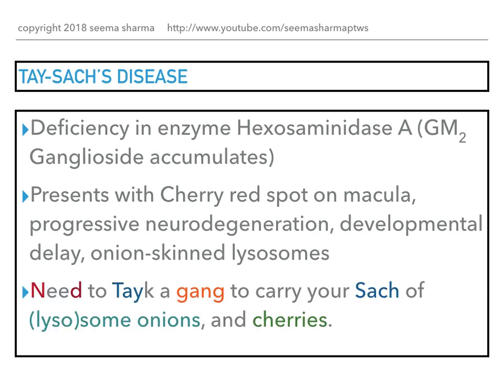My way of remembering this is: 'I need to take a gang to carry your sack of some onions and cherries.' The N and D remind you about neurodegeneration. 'Take' is for the name Tay from Tay-Sachs. 'Gang' is for the accumulated substrate, ganglioside. 'Sac' is from Tay-Sachs. 'Some onions' is for the onion skin lysosomal appearance. And 'cherries' is for the cherry red spot on the macula.